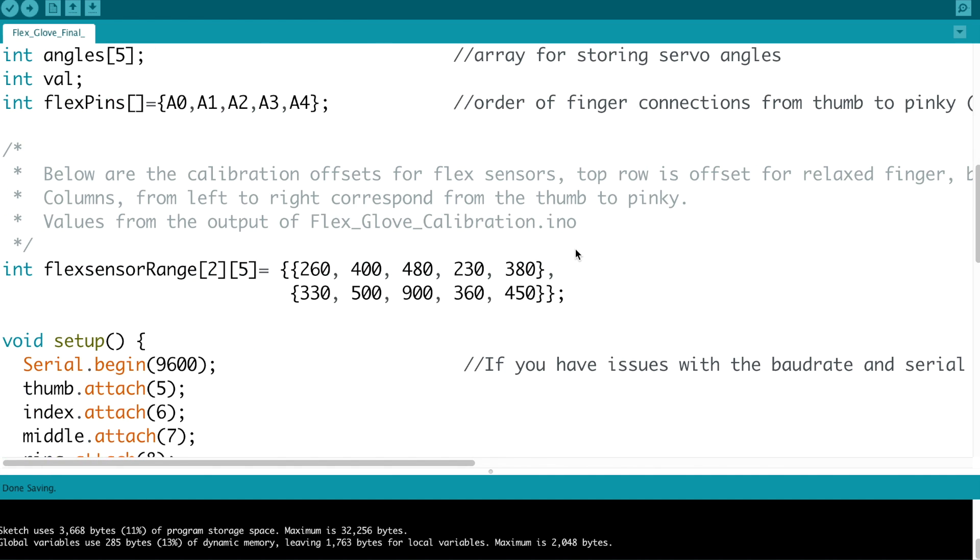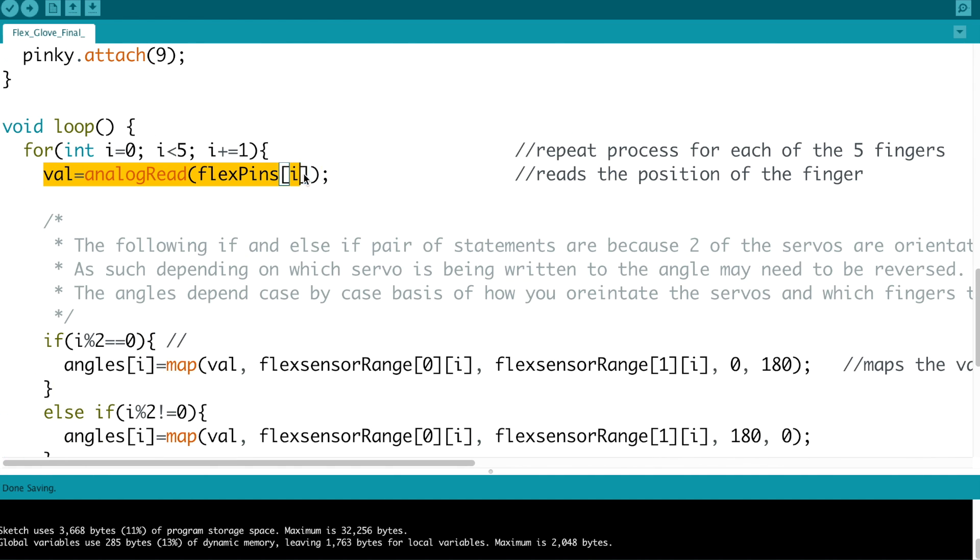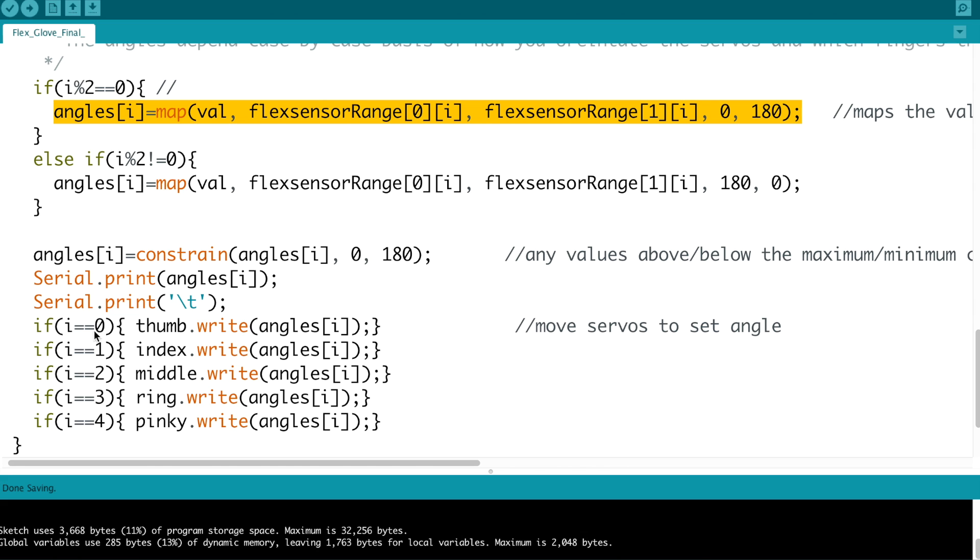You can find the complete code on my GitHub. Essentially, the code reads the analog value and maps it to a range of 0 to 180 degrees, corresponding to the position of the servo for each finger.